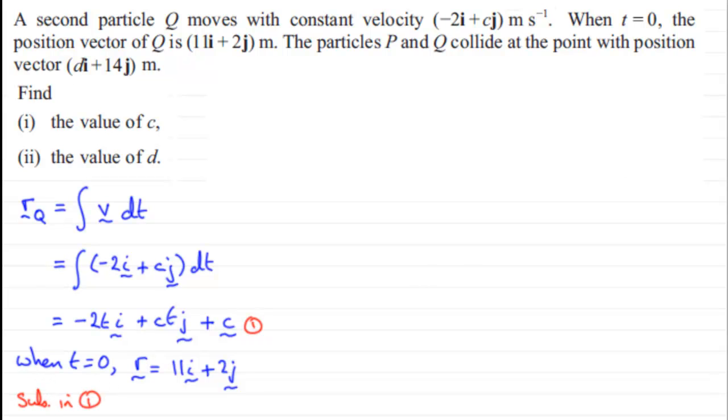then what we have got is 11i plus 2j must equal, well, if t equals 0, this component is 0, this component is 0, it just leaves us with the constant c. So that means that if we substitute this back into 1, then what we have got is, therefore,